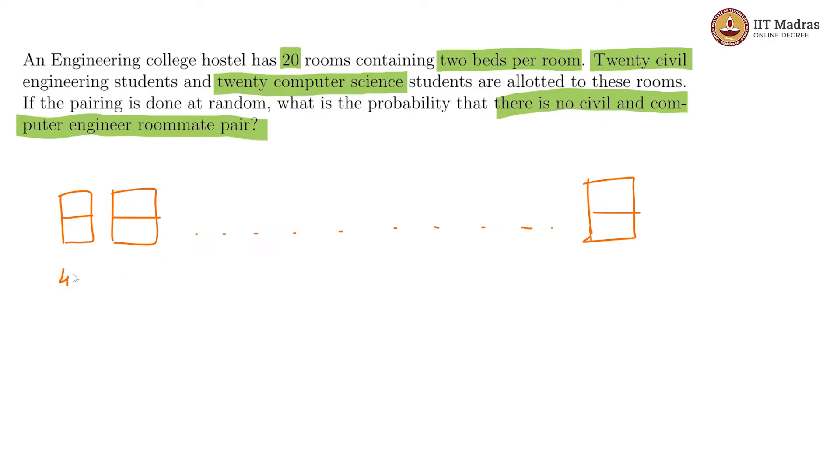So, the first room gets 40C2 ways of being filled. Then the next one has 38C2 and the next one will have 36C2 so on till we are left with 2C2.